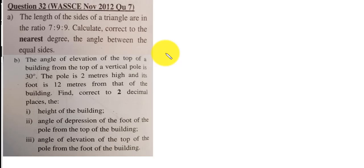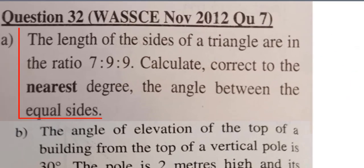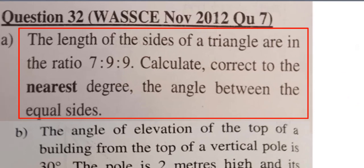Hello, so we solve a question from Wasi, private candidate, 2012, question number 7. We look at 7a. It says that the length of the sides of a triangle are in the ratio 7 to 9 to 9. Calculate, correct to the nearest degree, the angle between the equal sides.